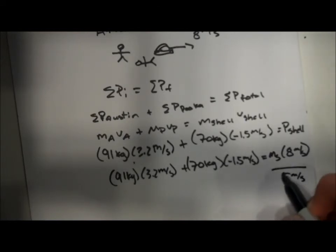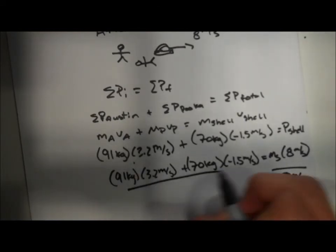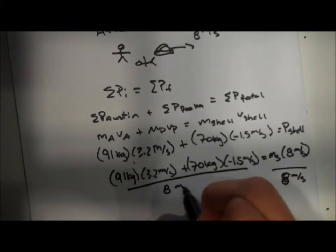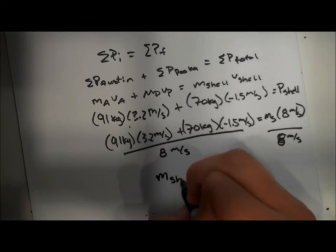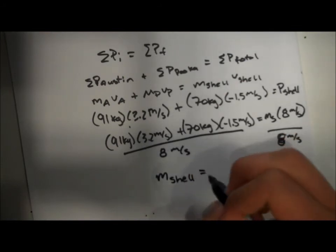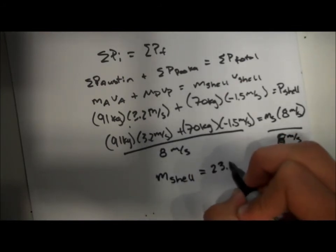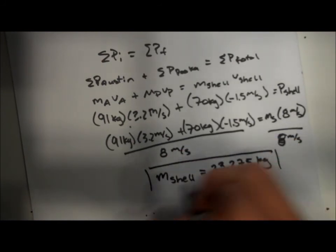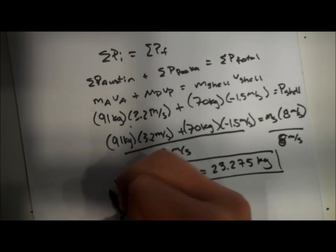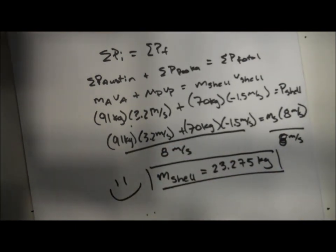So dividing all portions by 8 and with some clearly mathematical skills on our calculators, we come to the final equation that sets the shell mass equaling 23.275 kilograms exactly. Thank you very much and kablam.